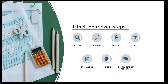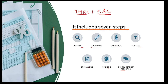Then accounting includes seven steps: identifying the transaction, measuring the transaction, recording, classifying, then summarizing, analyzing, and communicating to the interested parties of the business. So we can say that after identifying, measuring, recording, and classifying — which we do in bookkeeping — in accounting we add summarizing, analyzing, and communicating. After these four steps, we add these three steps in accounting.